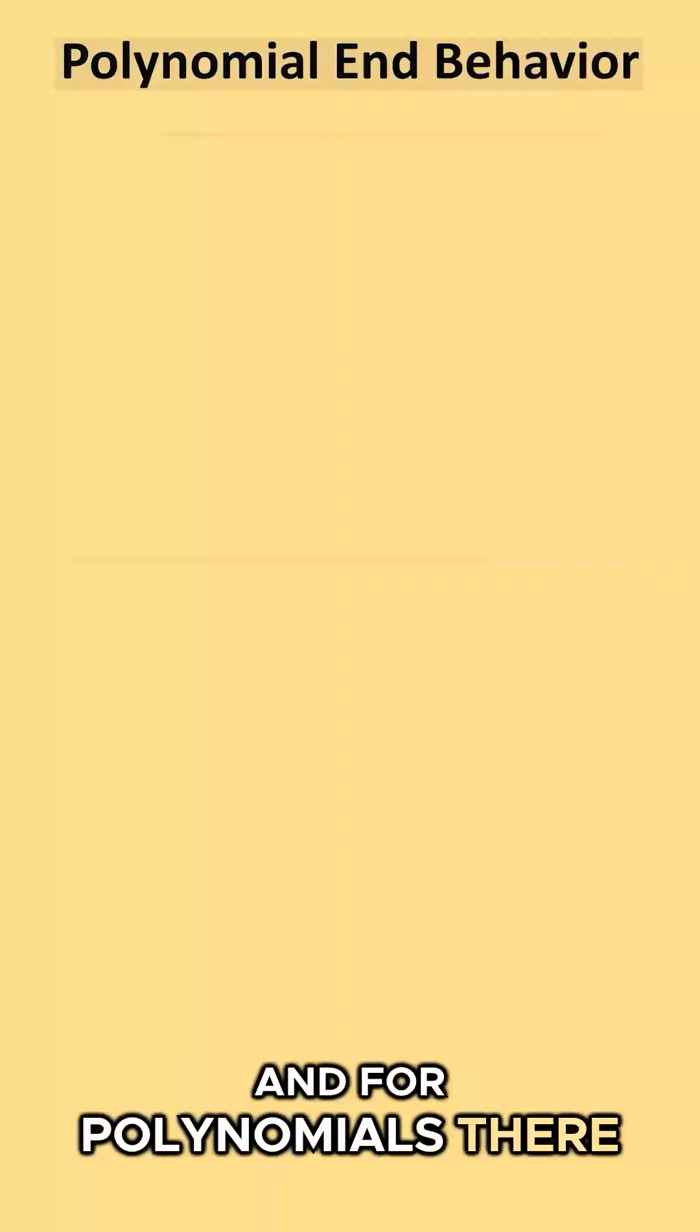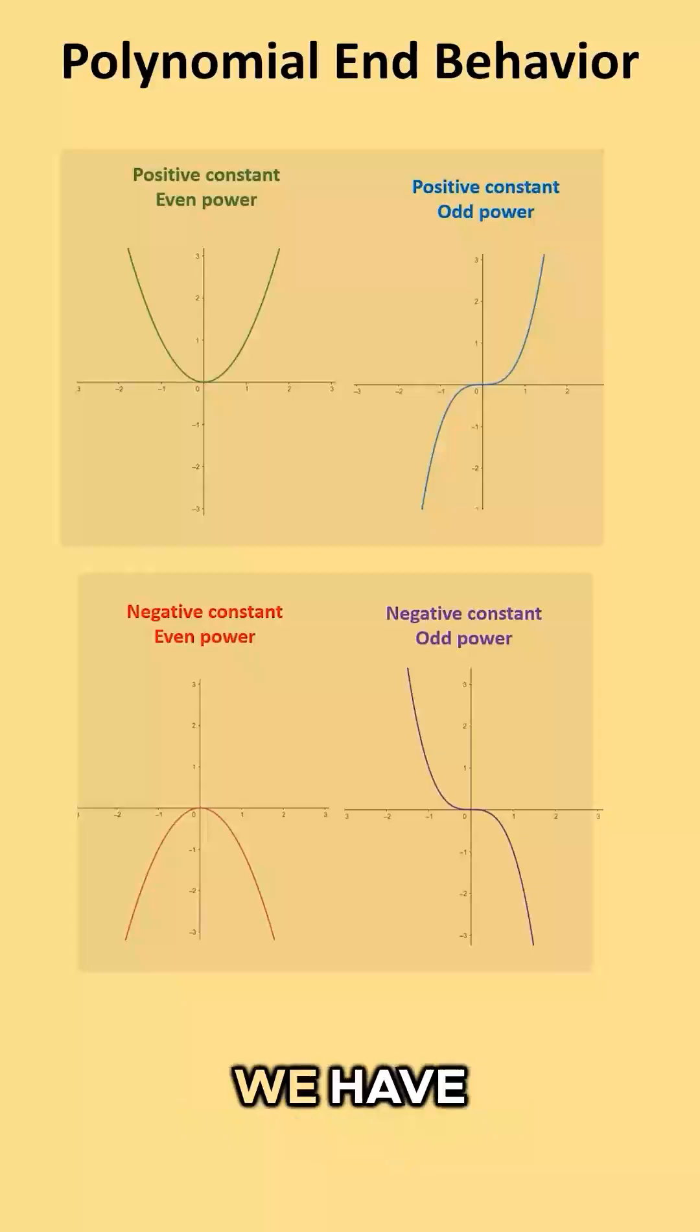And for polynomials, there are exactly four end behaviors that we have. So let's go ahead and talk about how we determine which end behavior a polynomial has.